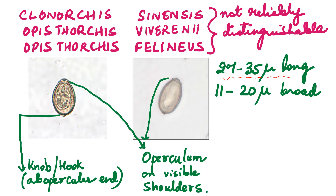Look at this egg in detail carefully. You can see the operculum is placed on shoulders, like our head is placed on shoulders. The operculum is supported by visible shoulders, and on the ab-opercular end there is a knob or a hook. Summary: Clonorchis and Opisthorchis produce small-sized eggs, just 27 to 35 microns. The operculum has visible shoulders beneath it and the ab-opercular end has a knob or a hook.